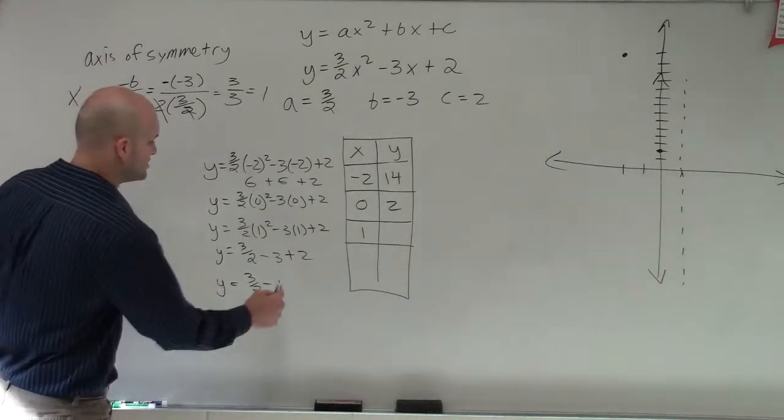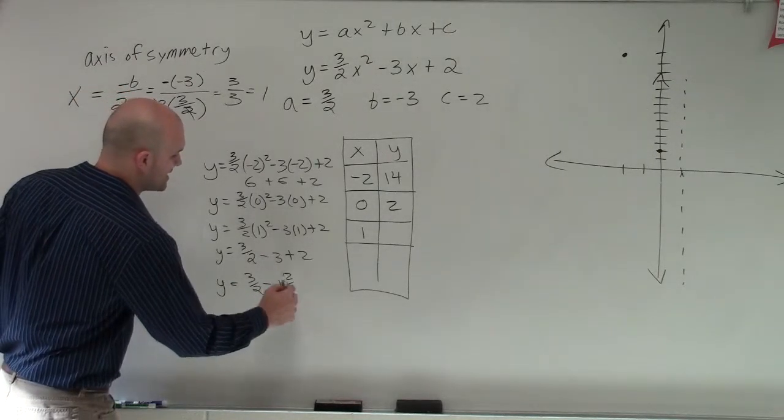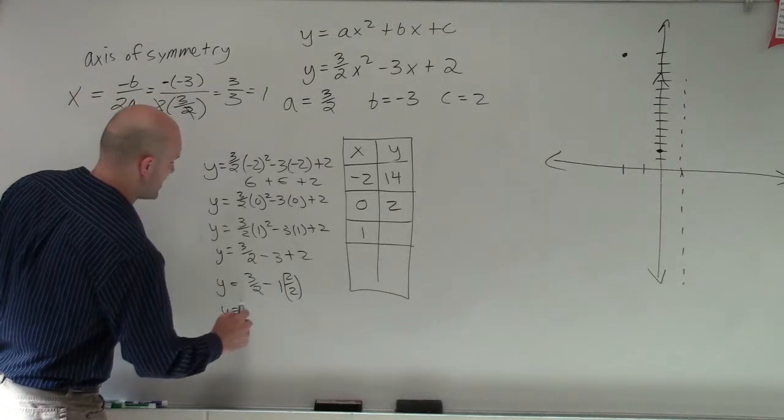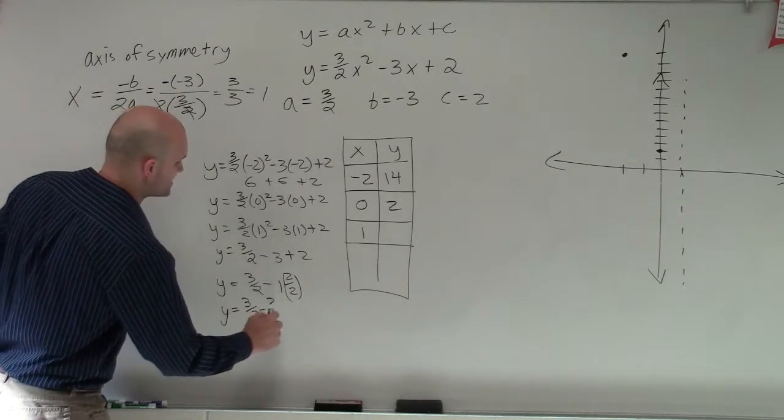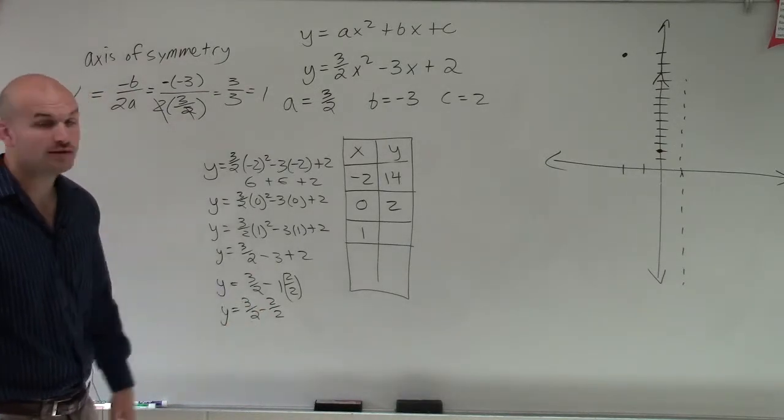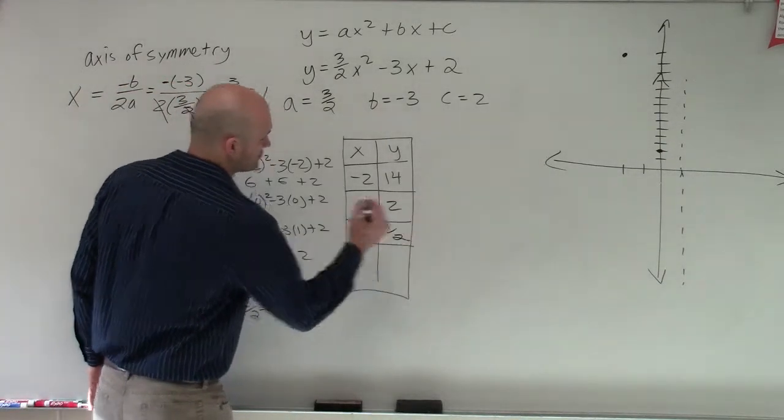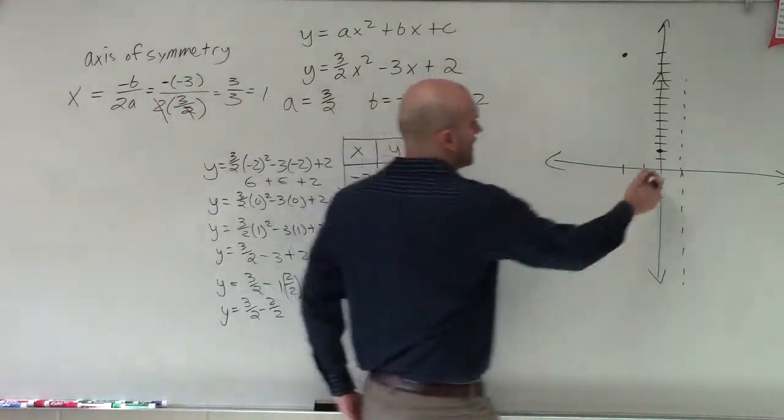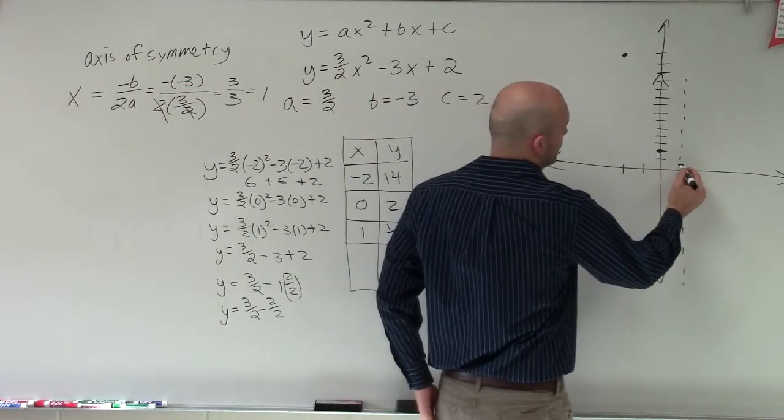And then to convert this, I just need to multiply this by 2 over 2 to get the same denominator. So therefore, I have y equals 3 halves minus 2 over 2. Therefore, you can see that y is going to equal 1 half over there. So over at 1, I'm left at 1 half.